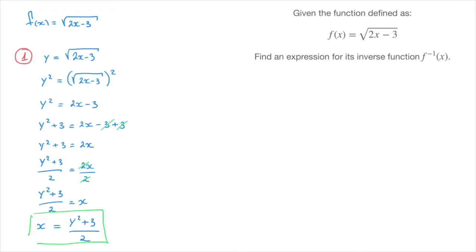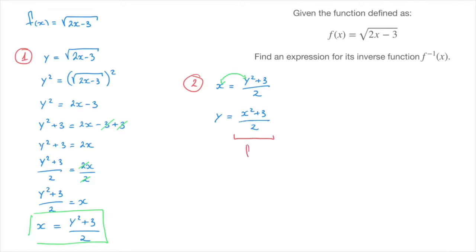We move on to step 2. We start from x equals y squared plus 3 over 2 and swap x and y — x becomes y and y becomes x — leading to y equals x squared plus 3 over 2. The expression on the right-hand side is the inverse function of f, so the final answer is: the inverse function of f equals x squared plus 3 over 2.